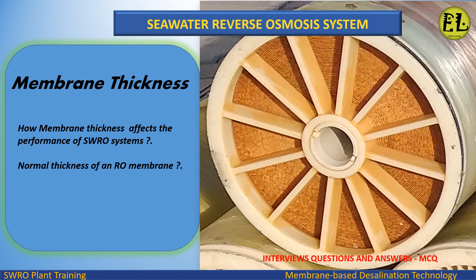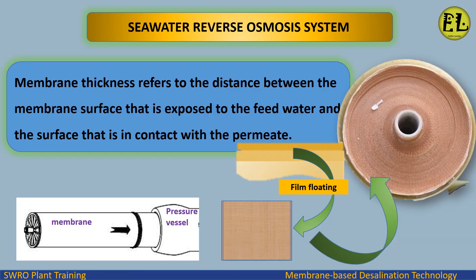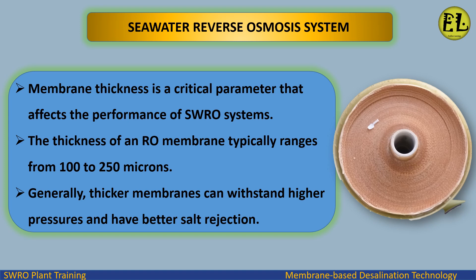Membrane thickness refers to the distance between the membrane surface that is exposed to the feed water and the surface that is in contact with the permeate. Membrane thickness is a critical parameter that affects the performance of SWRO systems. The thickness of an RO membrane typically ranges from 100 to 250 microns.